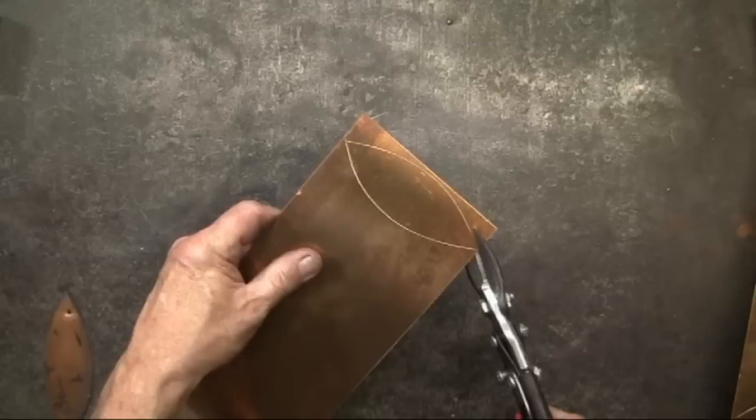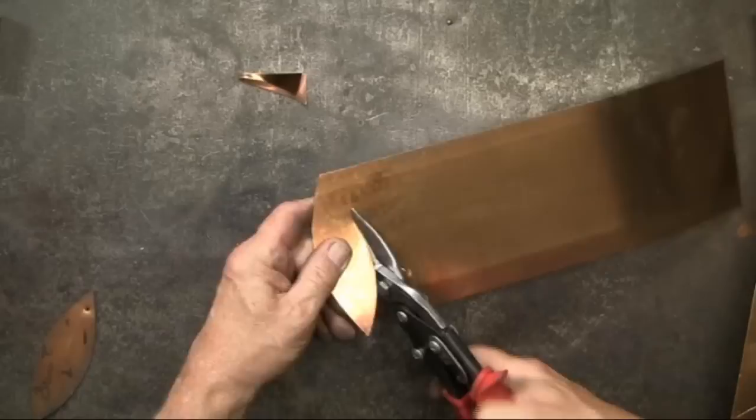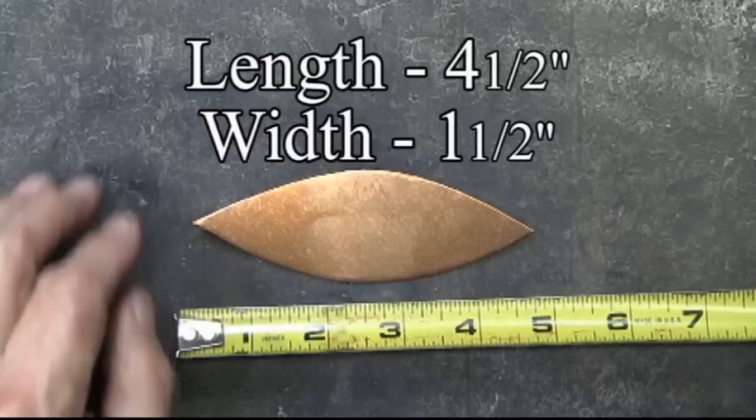I'm using sheet bronze here because I found a piece that was just about the right size for this spray at the metal recycler. But you can use whatever material you have on hand, whether it is copper, brass, stainless, or even sheet metal that can be painted.